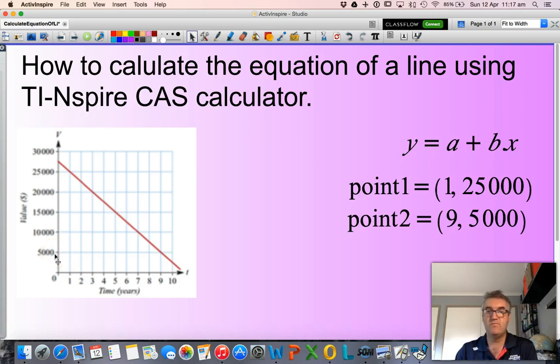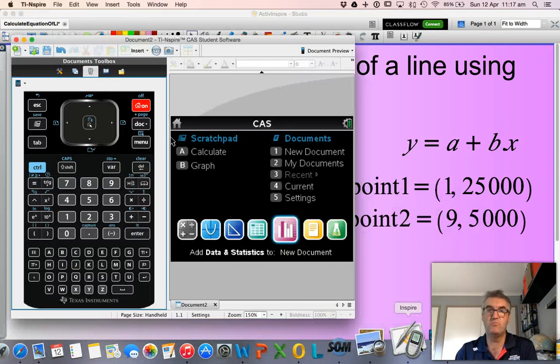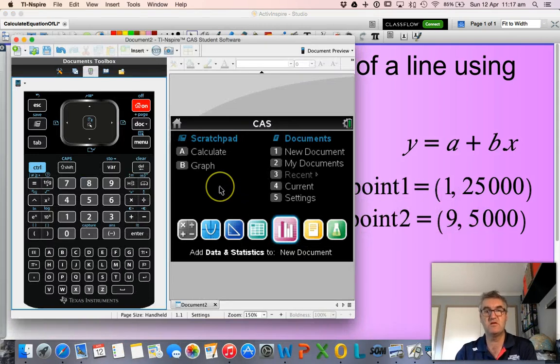Now what I do is I plug those two values into my CAS calculator. So I'll put those two coordinates into my CAS calculator. This is just the basic, I suppose, the login or the start screen.